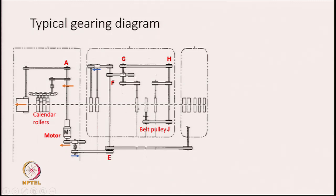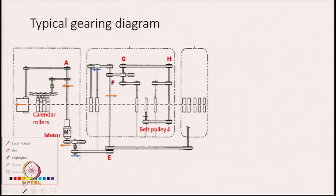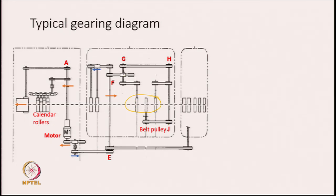These 3 rollers that you see here are the drafting unit. The motion goes to the front roller, and from there this motion goes to the back roller. From the bale pulley J, it goes to the middle roller also.